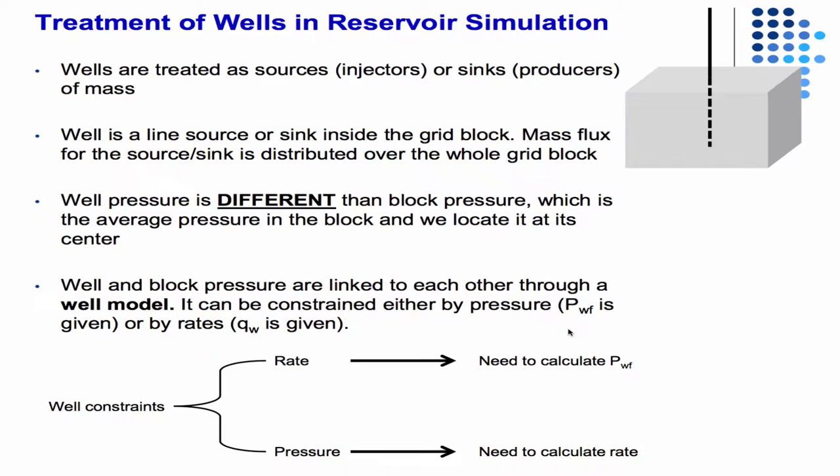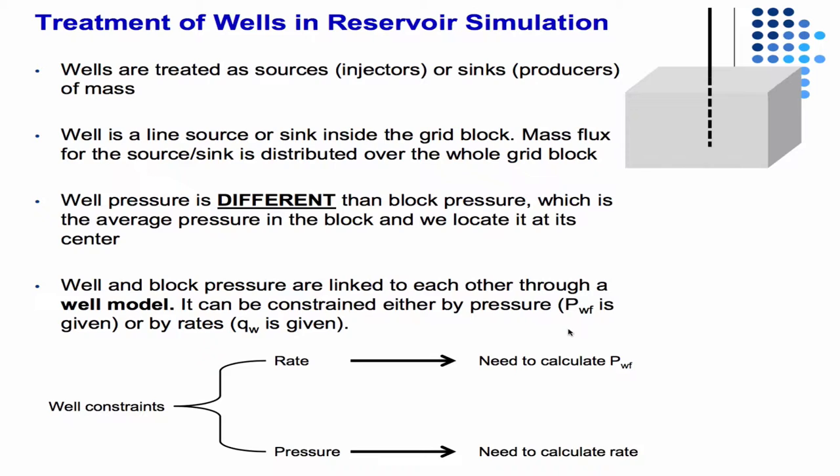Basically, there's two types of wells. Constant rate wells in which, if we have a constant rate well, we want to calculate the bottom hole pressure over time. And if we have a constant bottom hole pressure well, then we want to calculate the rate over time. Of course, we need some type of correction or well model if we have a well in our grid block.